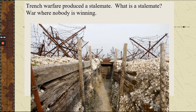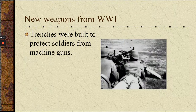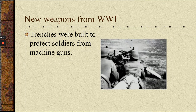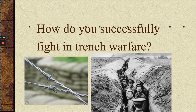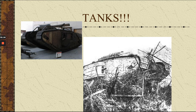Trench warfare produced a stalemate — a war where nobody's winning, tied game. Because trenches were much easier to defend than to attack, with machine guns protecting them and steel barbed wire, millions of men died. Flamethrowers were used as well. How do you successfully get through the machine guns and barbed wire? Tanks. That's what tanks were built for.